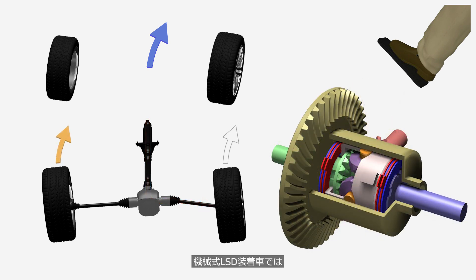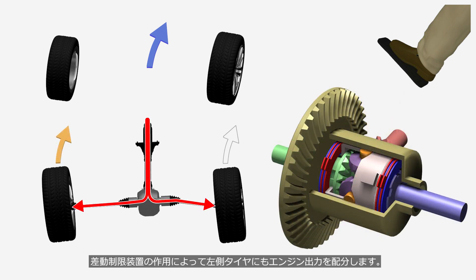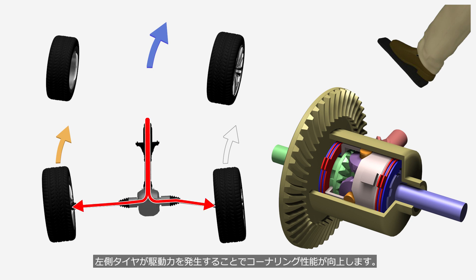In a car with a mechanical limited slip differential, engine power is distributed to the left-side tire through the action of the differential lock. Since the left tire generates traction, cornering performance is improved.